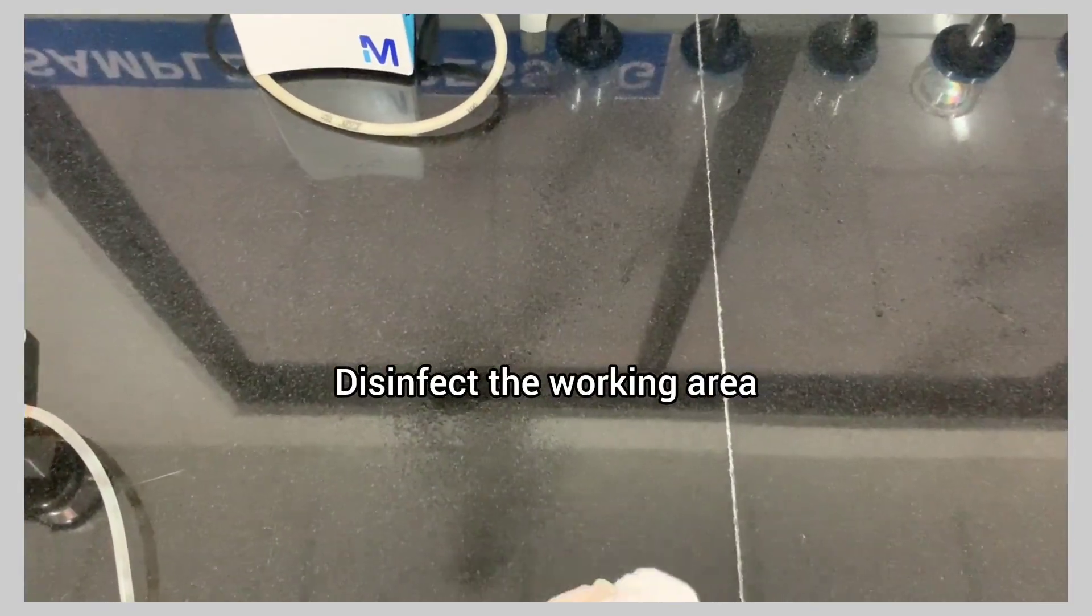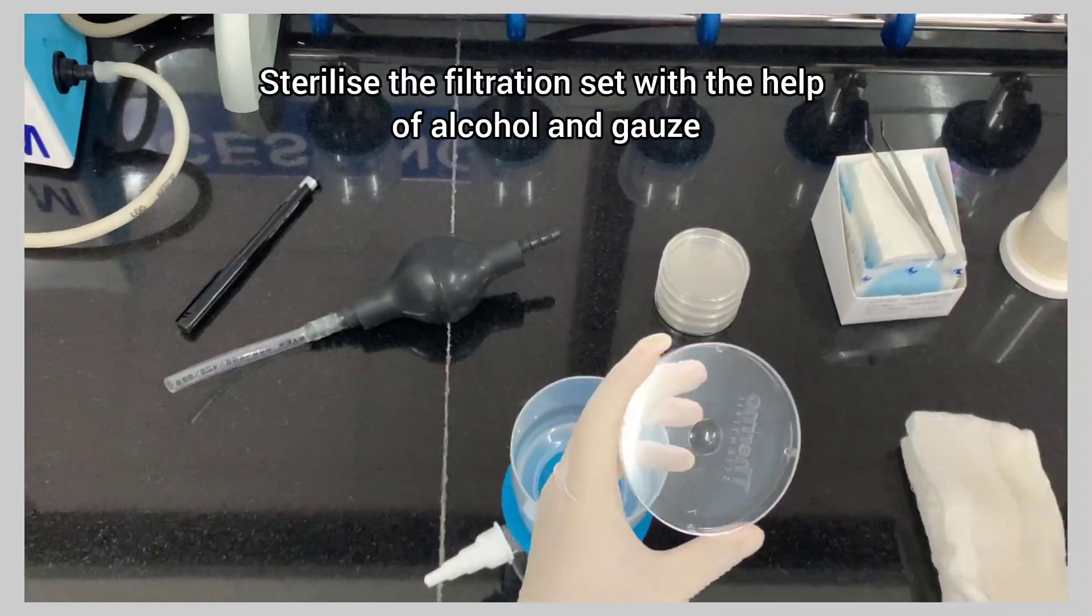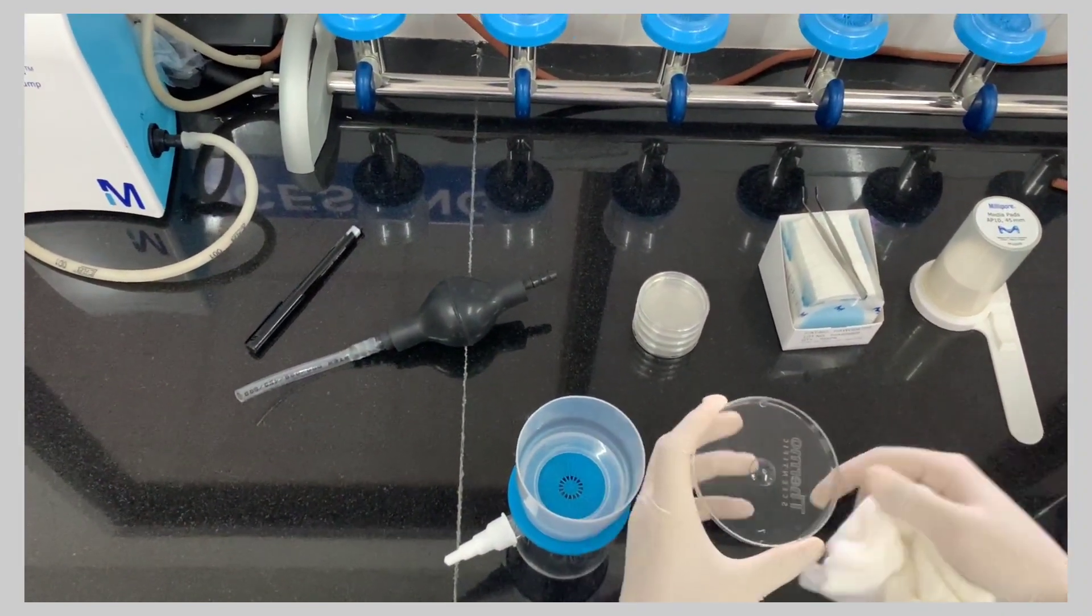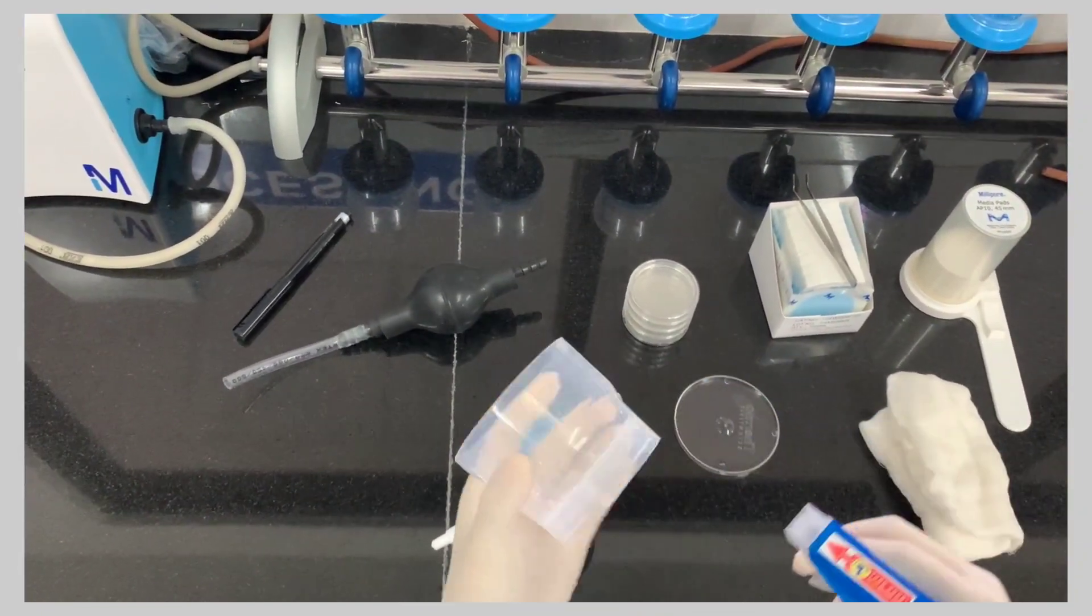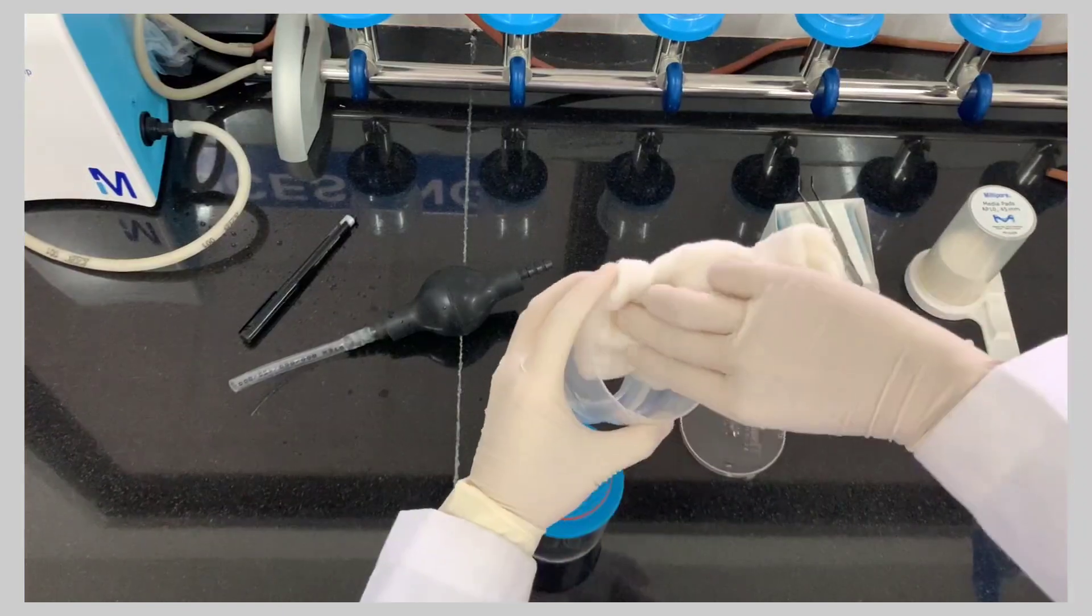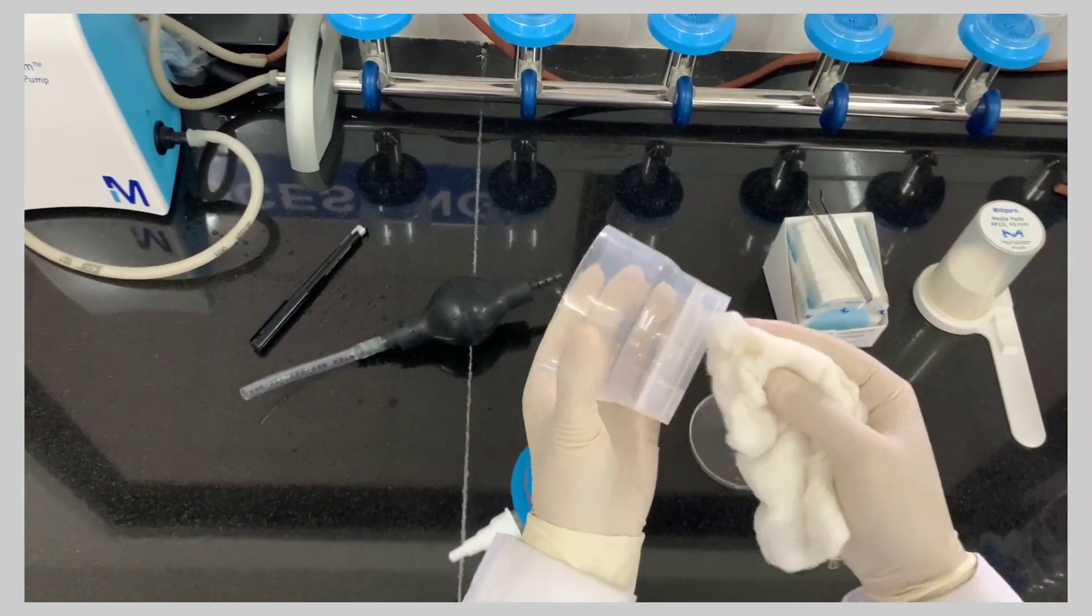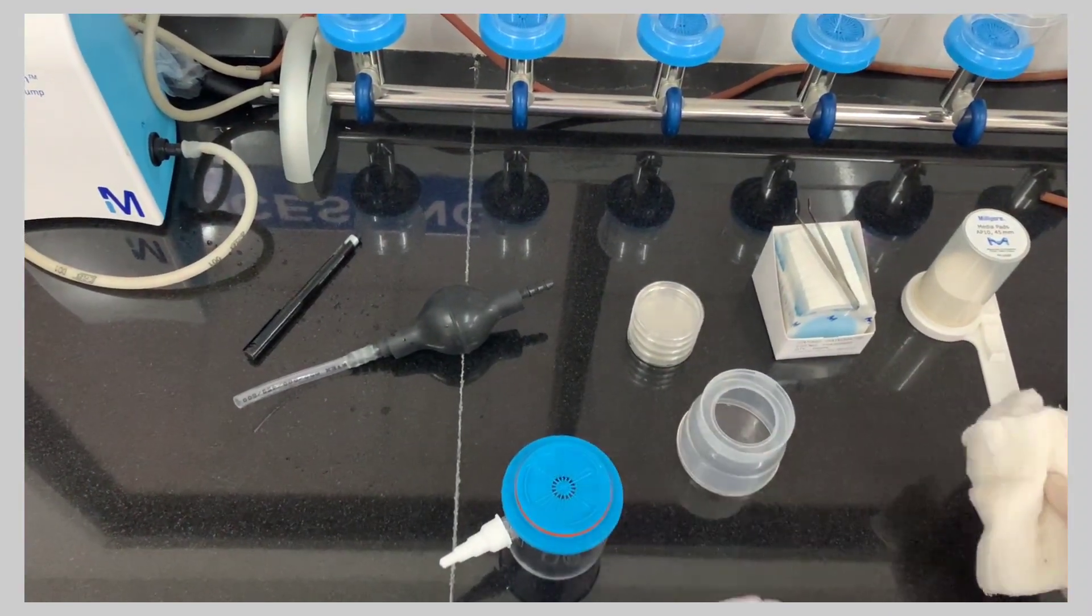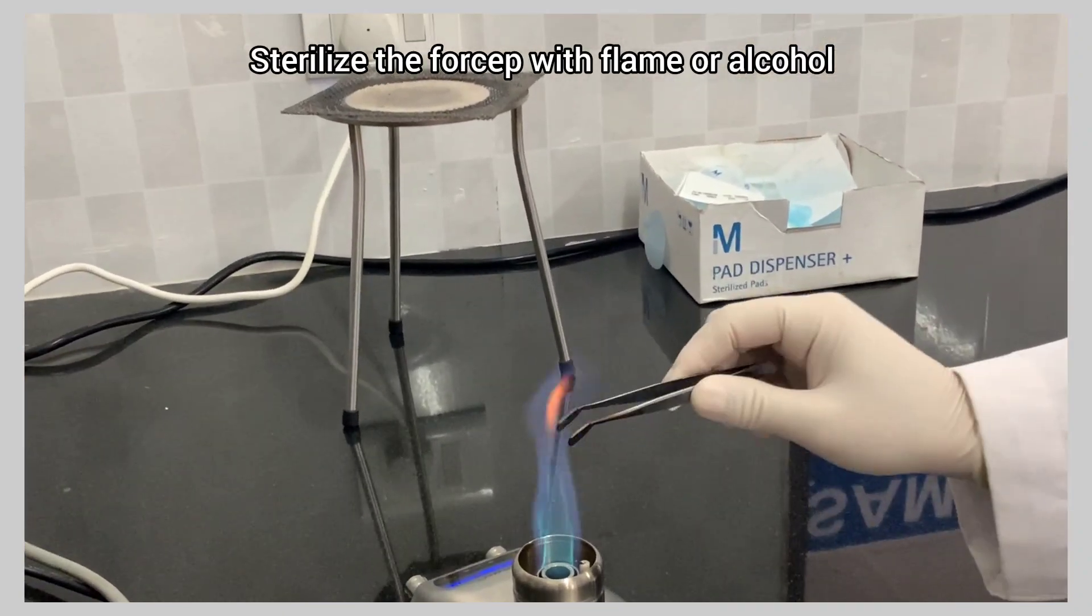Disinfect the working area. Sterilize the filtration set with the help of alcohol and gauze. Sterilize the forcep with flame or alcohol.